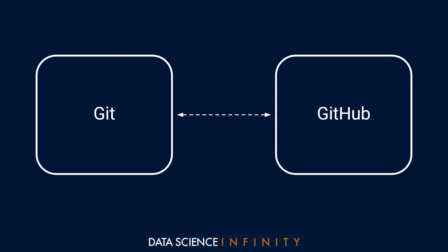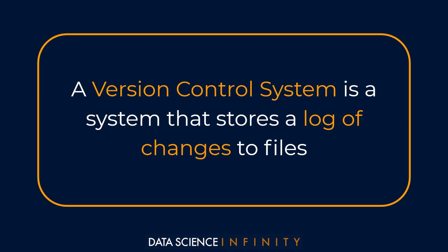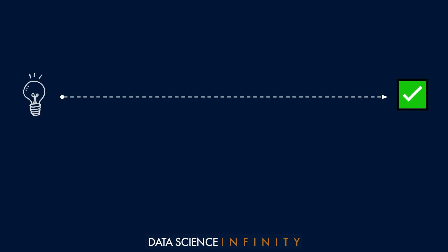The first is that Git is what is known as a version control system, which simply put is a system that stores a log of changes to files. Think of it as a filing system for every draft version of a document you've made for a particular project, right from creation through to completion. In data science, when creating code for a project, we often end up with many different versions as we work on it over time.